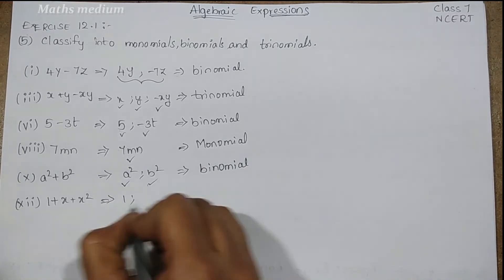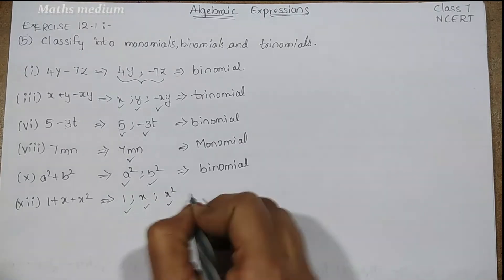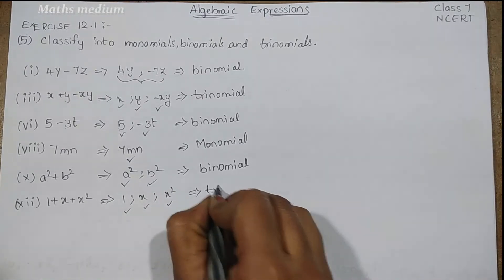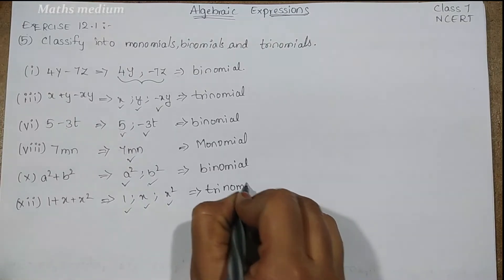Finally, 1 plus x plus x square. In this one, two, three terms we have, so it is called trinomial.